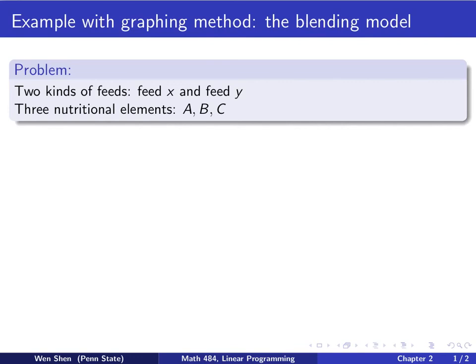So the problem is the following. Say you are a farmer and you have many cows that you need to feed. And on the market, there are two kinds of feeds available. Let's call them feed X and feed Y. And we will be using X and Y as the variable here.